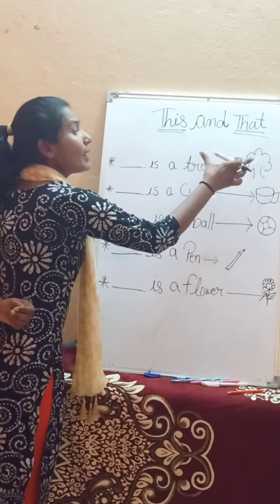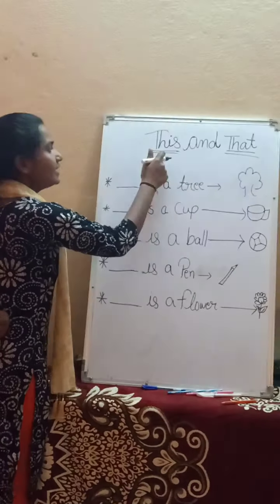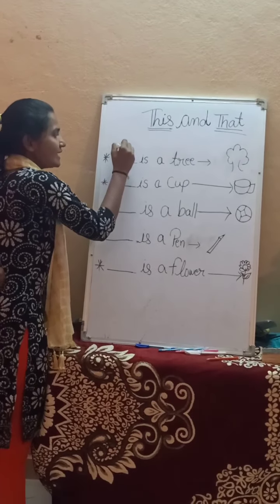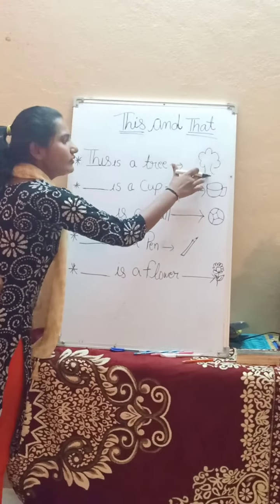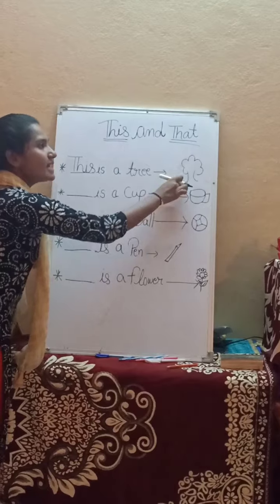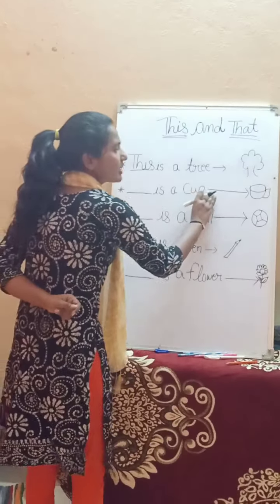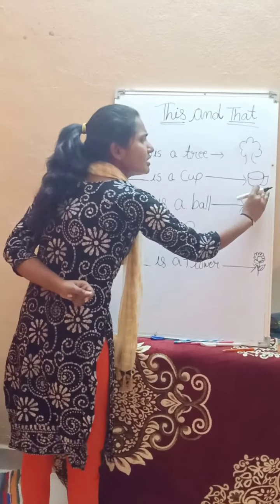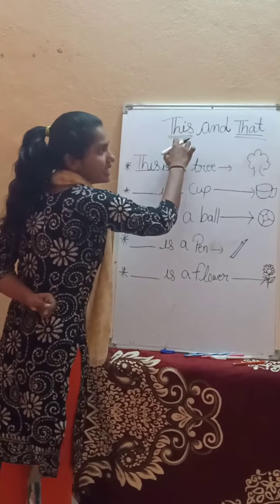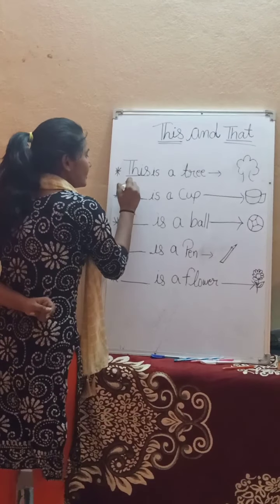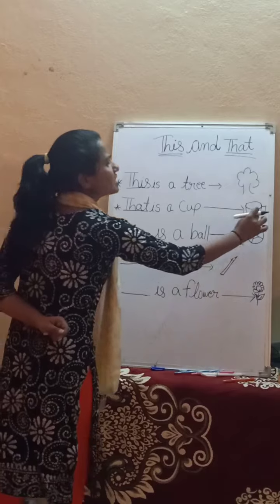See, this is a tree — the arrow shows it is near. So we use 'this': this is a tree. And here is a curve — the arrow shows it is far away. So what do we use? We use 'that': that is a curve.